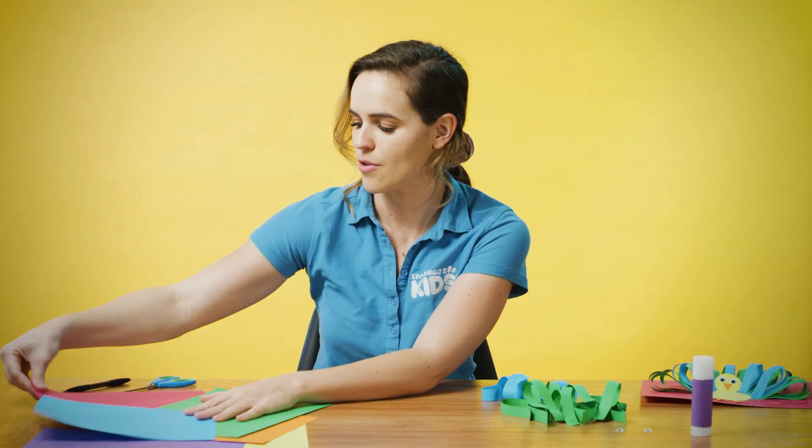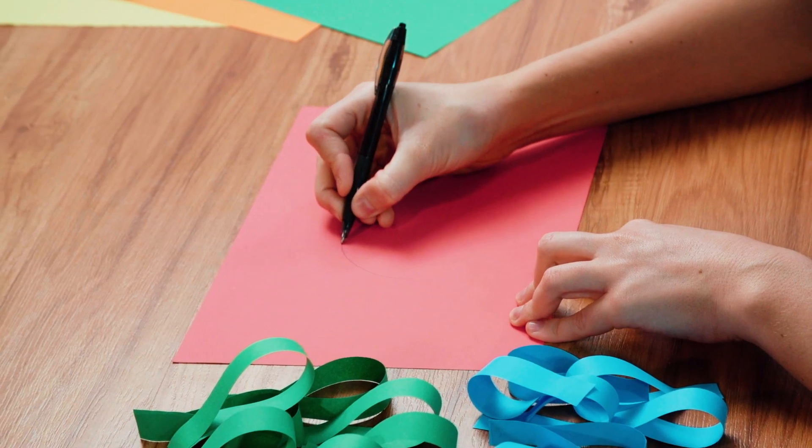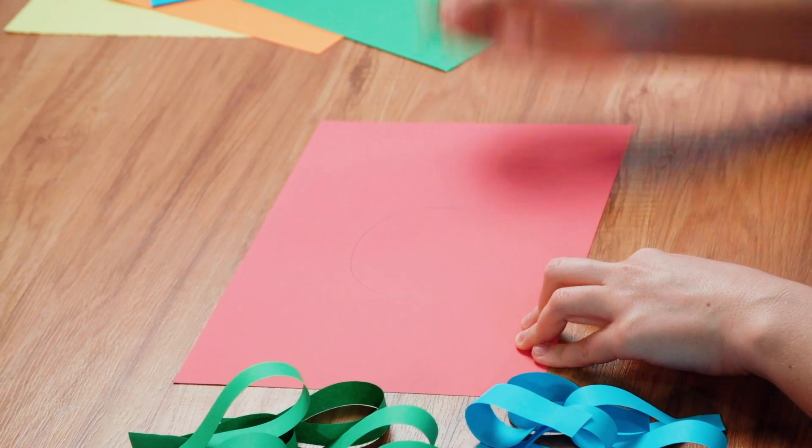Now we want to arrange our peacock feathers onto our background card. I'm going to choose pink as our background, and to make this a little easier, draw yourself a semicircle so that you can stick your feathers around the edge of that semicircle to make it a lot easier for you.